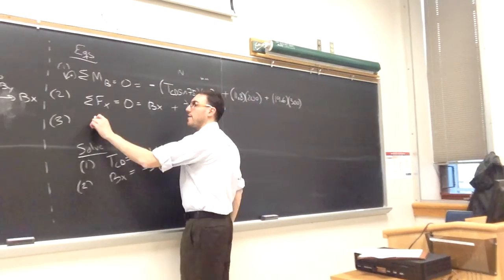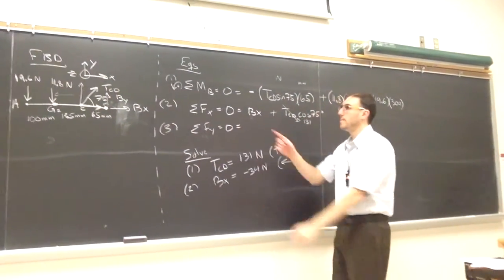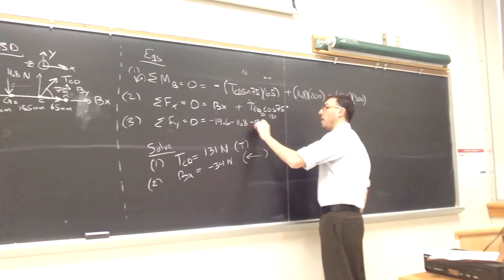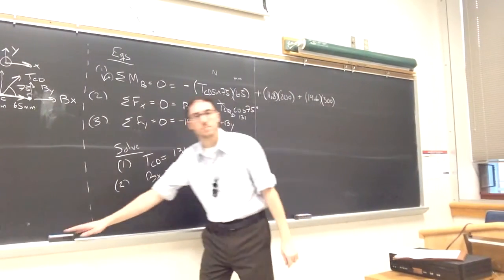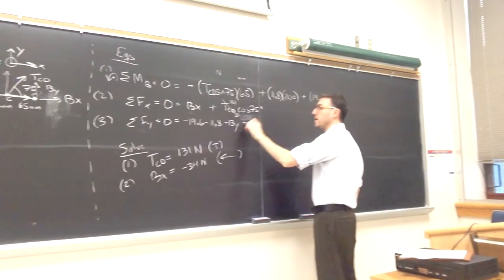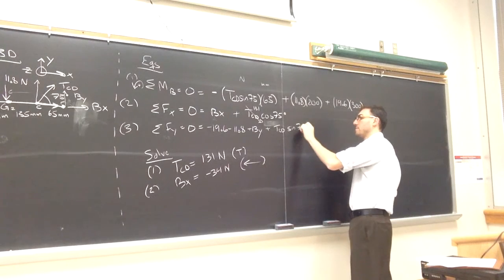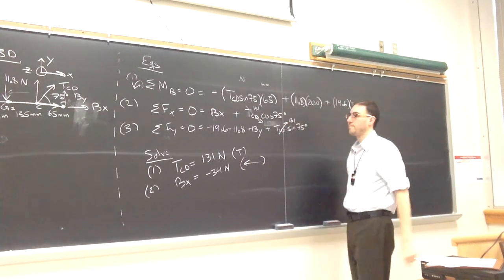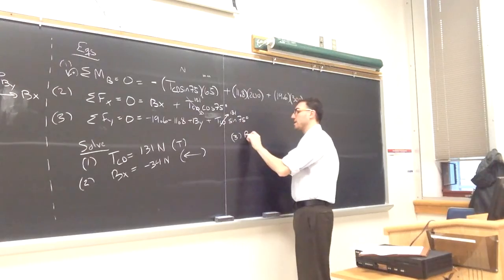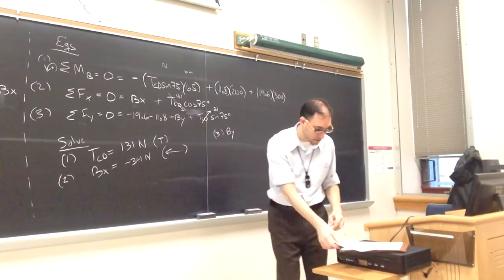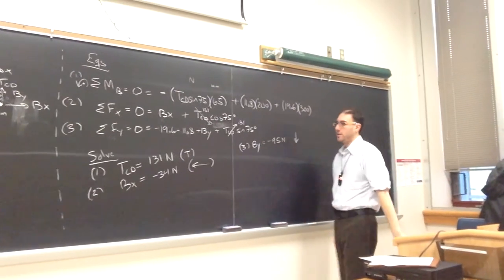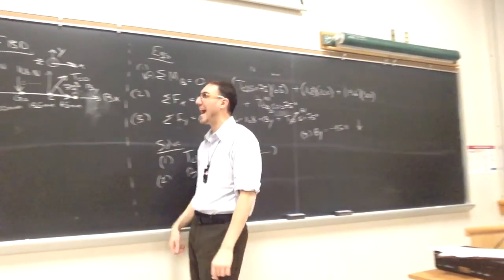I still have my sum of forces in the Y direction. In my diagram, I have the negative 19.6, a negative 11.8. I have plus BY. I assumed it was up. And I have now the vertical component of TCD which also is up, so sine 75. Now in my equation three, since I know TCD, BY is my last unknown. I can solve that BY is actually also negative here, negative 95 newtons.